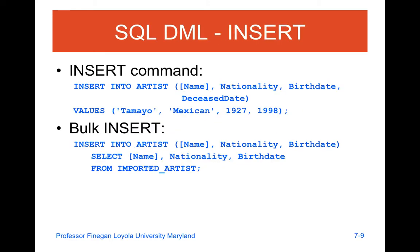If I'm going to use the INSERT command, you're going to identify where you're inserting, the fields that you're inserting to, and then the values that you're putting into the fields. If you're doing a bulk insert, you'll be able to pull from a larger list — in this case from an imported artist table — which will allow you to pull different information about the artist from an additional table in bulk.